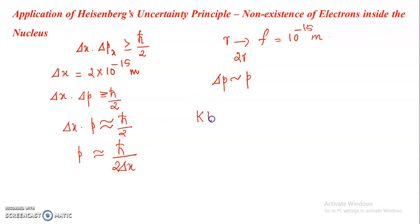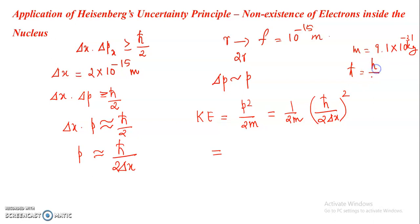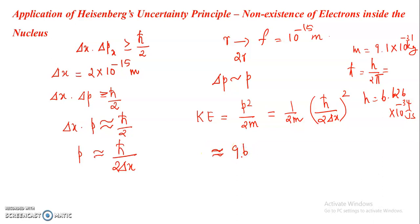The kinetic energy of a moving particle is related to momentum by p squared over 2m. Substituting p equals h-cross over 2 delta x, we get KE equals 1 over 2m times (h-cross over 2 delta x) squared. Substituting the mass of the electron m equals 9.1 times 10 raised to minus 31 kg, h-cross equals h over 2 pi, h equals 6.626 times 10 raised to minus 34 joule-seconds, and delta x equals 2 times 10 raised to minus 15 meters, we obtain a kinetic energy of approximately 96 mega electron volts.